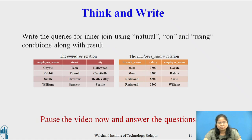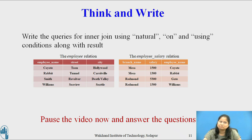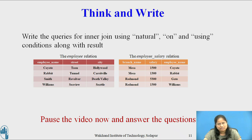Till now we have considered the inner join using join conditions natural, on, and using. Now pause this video and reflect on this question for a minute or two and write your response. The question is: write the queries for the inner join using natural, on, and using conditions along with the result. Consider two relations — the employee relation with attributes employee name, street, and city; and the employee salary relation with attributes employee name, branch name, and salary. Salary information is missing for employee Smith in the employee salary relation, and employee information is missing for the Gates employee in the employee relation.